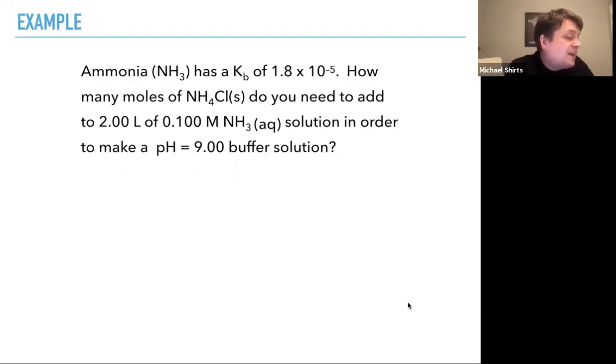So ammonia has a Kb of 1.8 times 10 to the minus fifth. How many moles of ammonium chloride do you need to add to two liters of 0.1 molar ammonia, aqueous ammonia solution, in order to make a pH 9.00 buffer solution? Okay, so let's think.